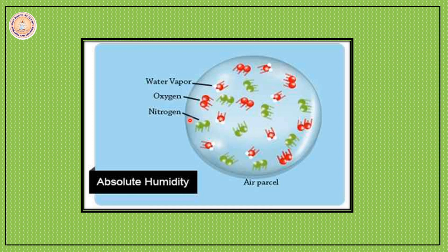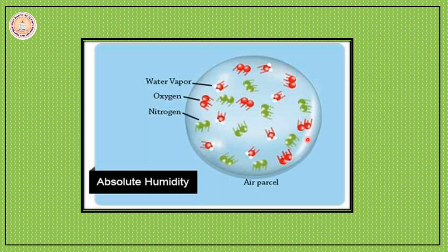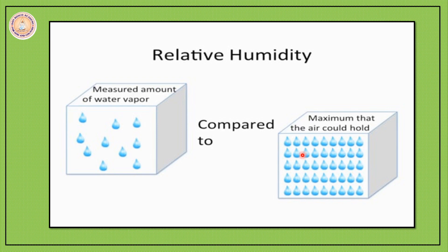Absolute humidity is the actual amount of water vapor in a given volume of air at a given temperature. It is measured in grams per cubic meter. Relative humidity is the ratio — the comparison between absolute humidity, that is the amount of water vapor held in a given volume of air at a given temperature, and the maximum amount of water vapor the same volume of air can contain at that temperature. It is expressed in percentage.